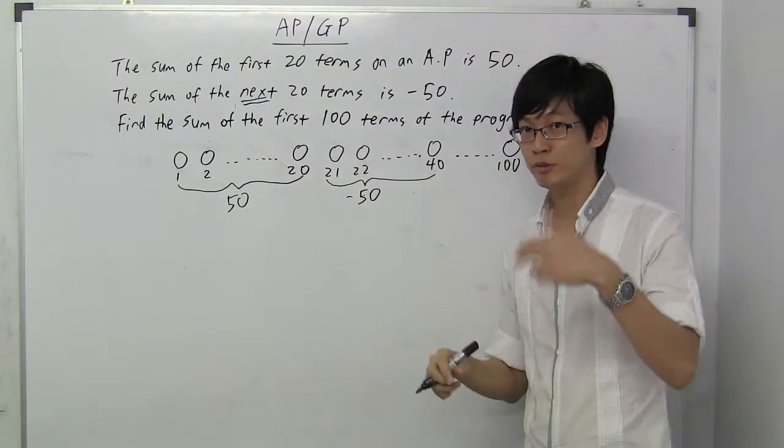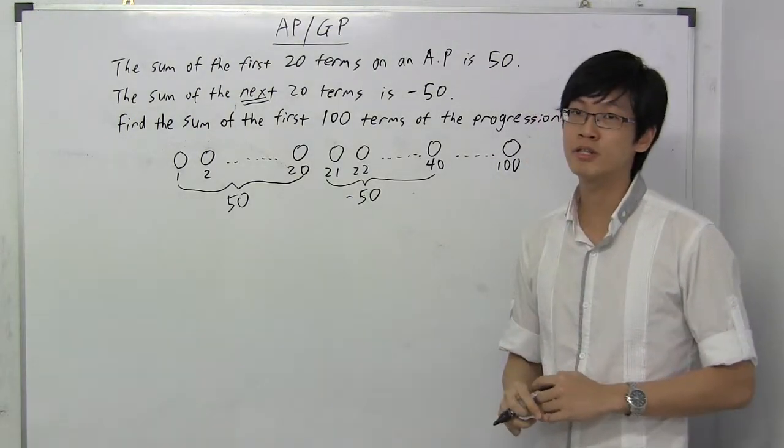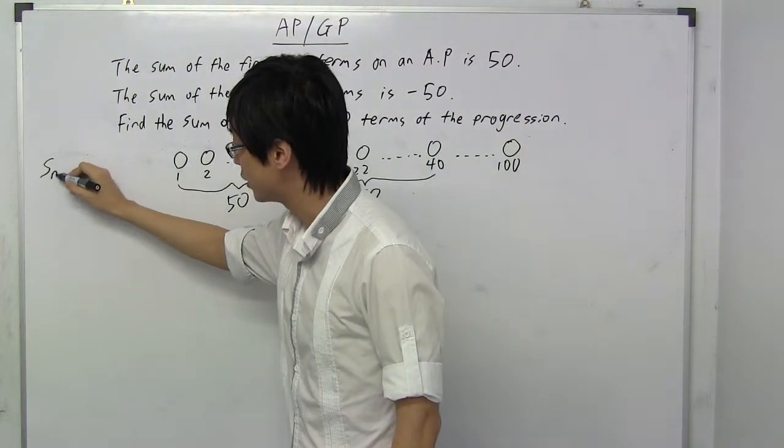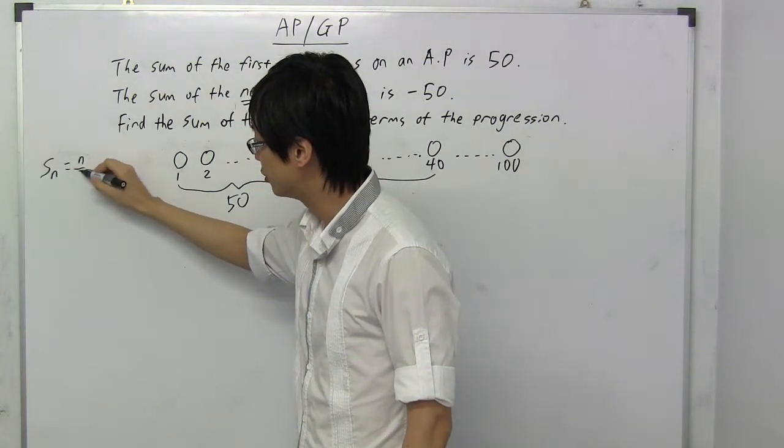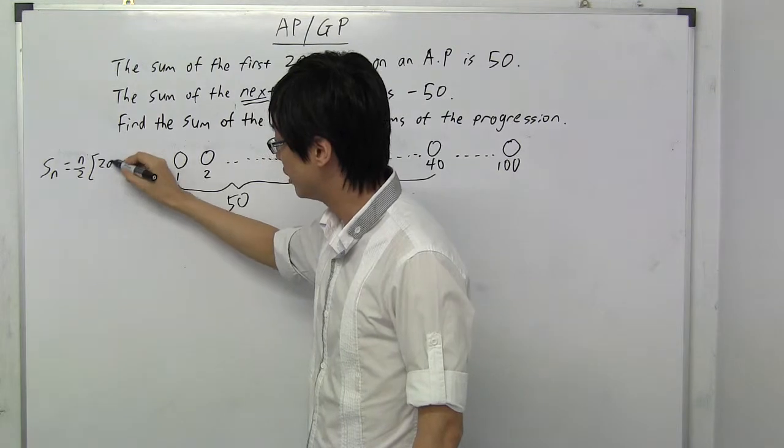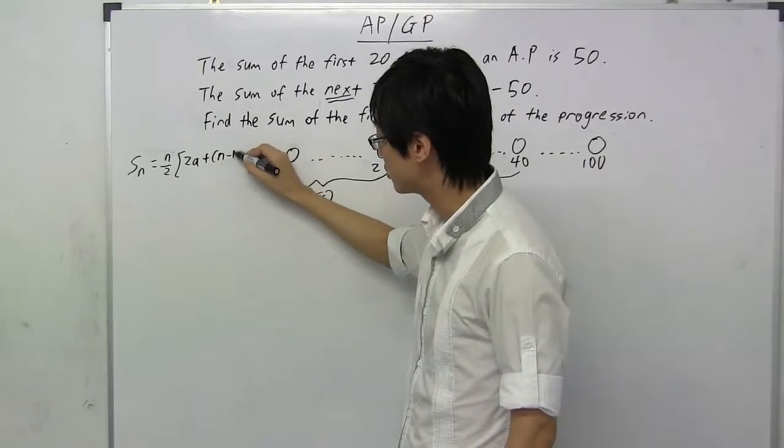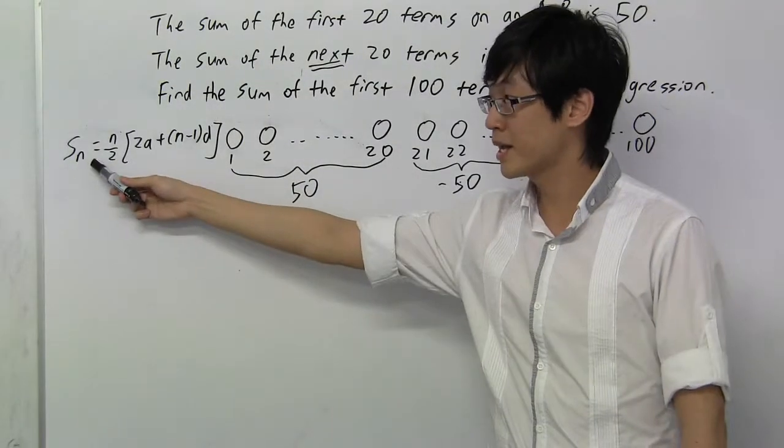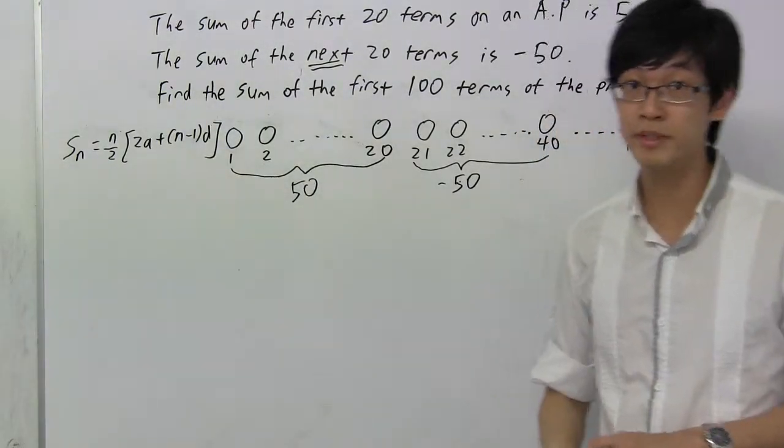To solve this question, we need to think of the formula that we just went through. Which is, the sum of the first N terms for the AP is N over 2, 2A plus N minus 1D. This is the sum of the first N terms of AP, the formula.